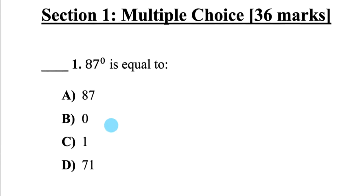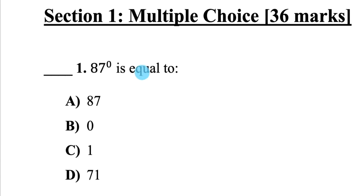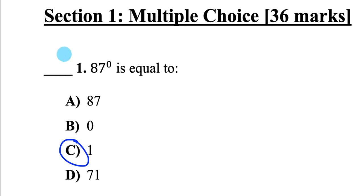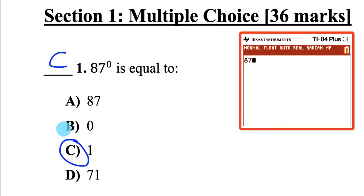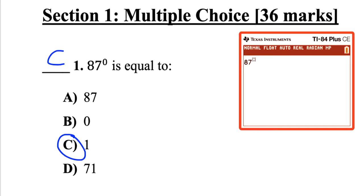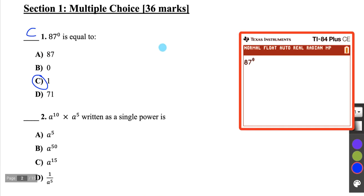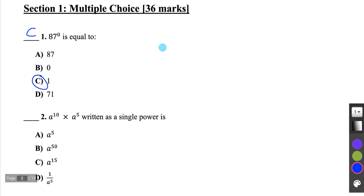Question 1: 87 to the power of 0 equals — I know anything to the power of 0, except for 0 to the power of 0, is equal to 1, so C. For a question like that, where it's a simple evaluating question, type it on your calculator and double check your answer.